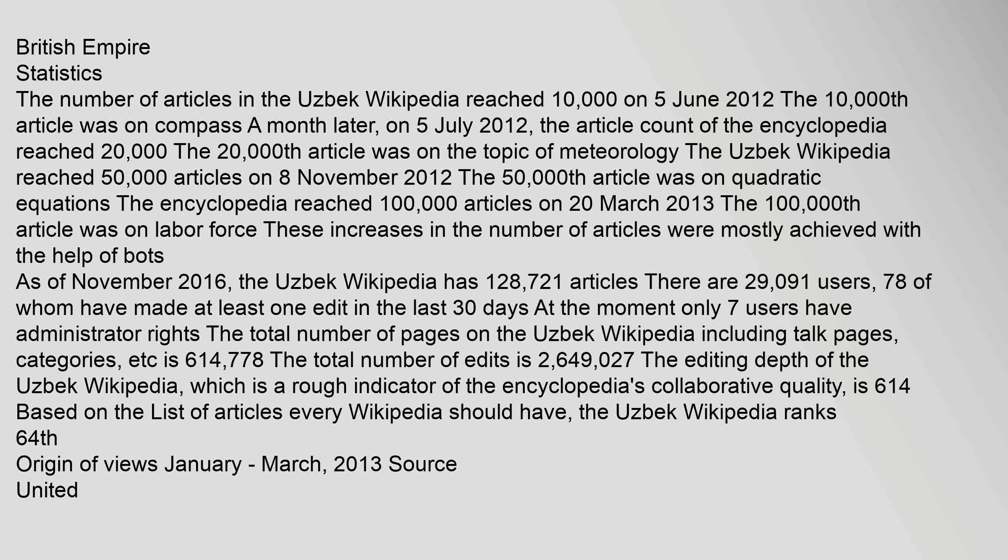As of November 2016, the Uzbek Wikipedia has 128,721 articles. There are 29,091 users, 78 of whom have made at least one edit in the last 30 days. Only seven users have administrator rights. The total number of pages on the Uzbek Wikipedia, including talk pages, categories, etc., is 614,778. The total number of edits is 2,649,027. The editing depth of the Uzbek Wikipedia, a rough indicator of collaborative quality, is 614. Based on the list of articles every Wikipedia should have, the Uzbek Wikipedia ranks 64th.